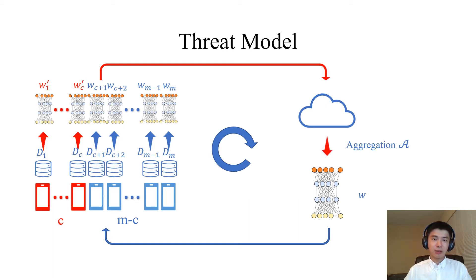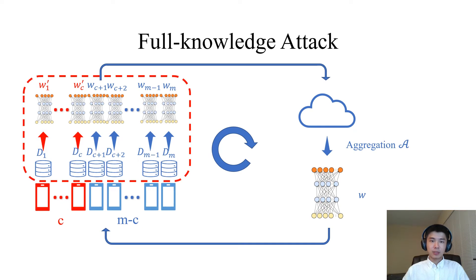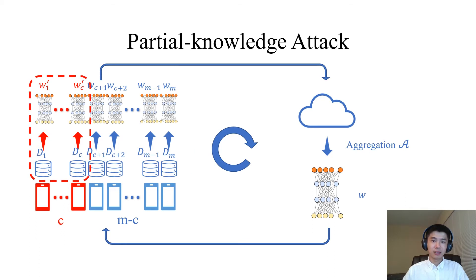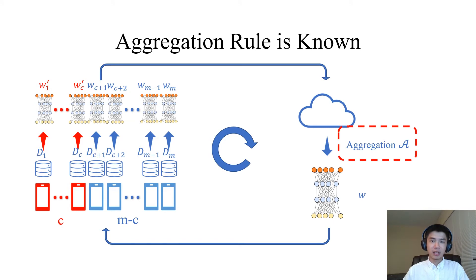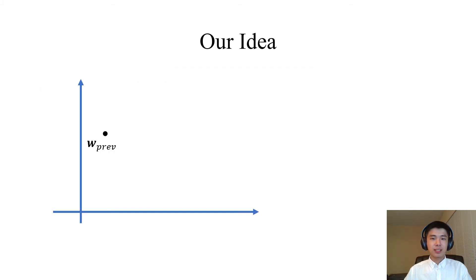After the master aggregates the received local models, it gets a global model that has been poisoned. As discussed, an attacker may or may not know the model or data on other benign workers. If the attacker knows such information, the attacker can perform a full-knowledge attack. Otherwise, the attacker only has knowledge about the compromised workers and performs a partial-knowledge attack. Also, the attacker may or may not know the aggregation rule the master uses.